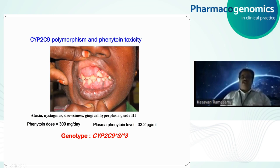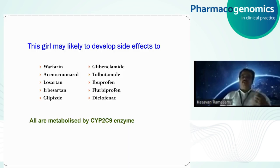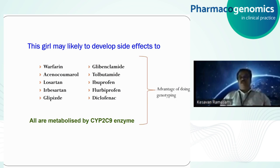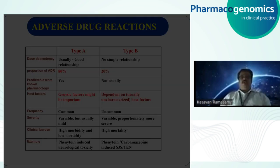One thing to note about why genotyping is important — it is not limited to phenytoin alone. CYP2C9 metabolizes several drugs. A patient with star 3 / star 3 may also develop adverse effects to warfarin and other CYP2C9 substrates. So genotyping is important for prevention of adverse effects across this group of drugs. Phenytoin-induced neurologic toxicity is a type A adverse drug reaction, where many patients develop toxicity based on the pharmacokinetic factors discussed.